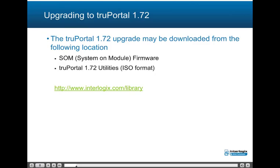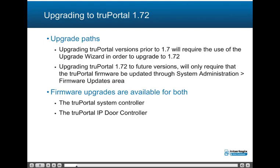The TruePortal 1.72 upgrade may be downloaded from the web location shown, where you will find downloadable firmware and utilities files. Upgrading to 1.72 requires use of the upgrade wizard. In future releases, upgrades will require only that the TruePortal firmware be updated within the TruePortal interface through the system administration tab using the firmware updates area. Note that TruePortal versions prior to 1.7 will also require the upgrade wizard. Firmware upgrades are available for both the TruePortal system controller and the TruePortal IP door controller.